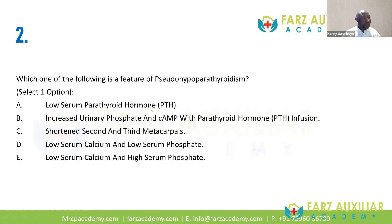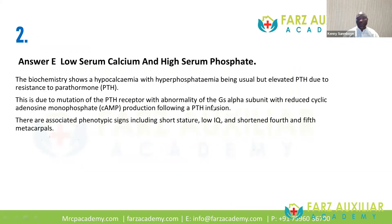Dr. Daz says E — absolutely right. It's E: low serum calcium and high serum phosphate. In pseudo-hyperparathyroidism, unlike hyperparathyroidism, you don't have a low PTH — you actually have a high PTH. The problem is there's a lack of responsiveness to PTH. That's the key difference. You get raised phosphate levels and the PTH is really elevated because there's resistance to PTH — you get a very very high PTH from the outset.